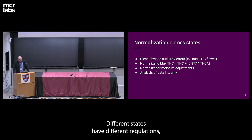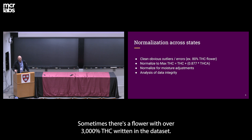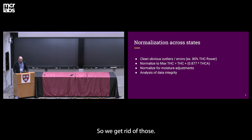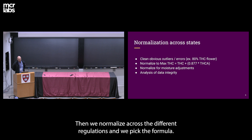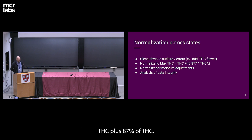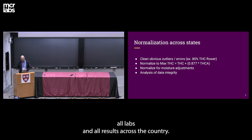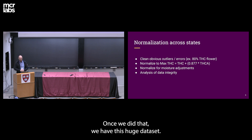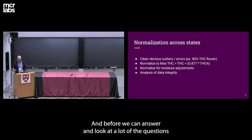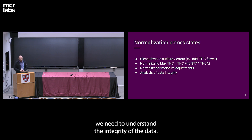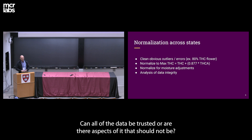Different states have different regulations, so we need to normalize the data. The first step is to clean the data — sometimes there's a flower with over 3,000% THC in the data set. Then we normalize using the formula THC plus 87% of THCA, which is max THC, and we moisture-adjust. Some states prohibit moisture adjustment, some mandate it. Some states force total THC, others have max THC, but we wanted to compare all labs and results across the country. Once done, we need to understand the integrity of the data — can all of it be trusted?